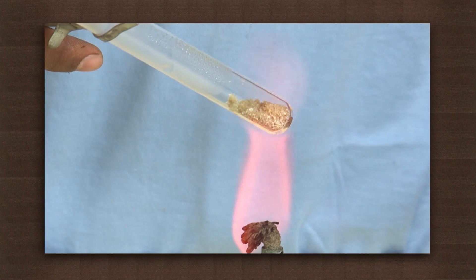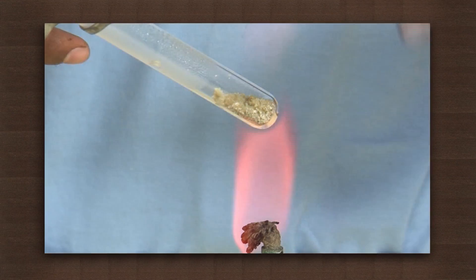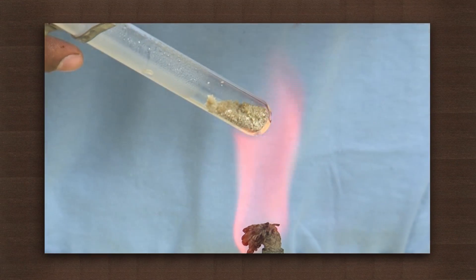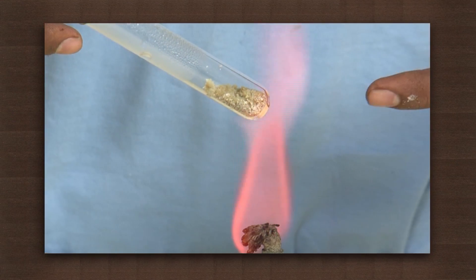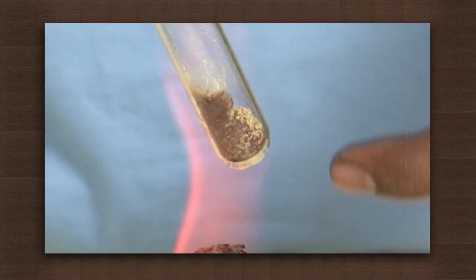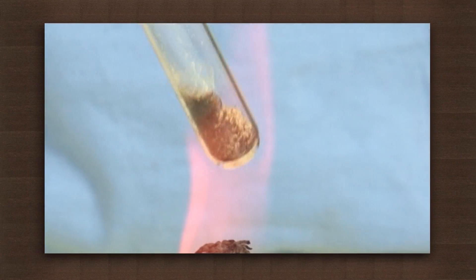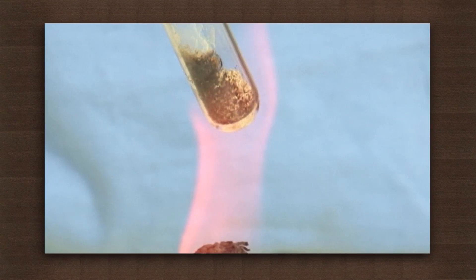Initially the crystals decolorize as they lose the water of crystallization and turn anhydrous. The anhydrous ferrous sulphate then further breaks down into ferric oxide and a mixture of sulphur dioxide and sulphur trioxide.